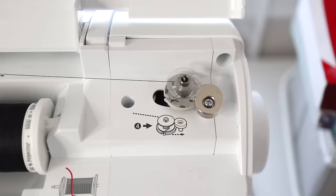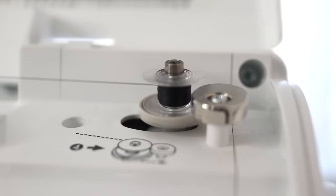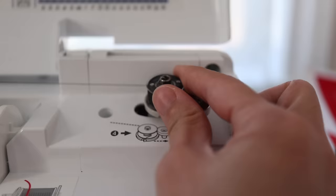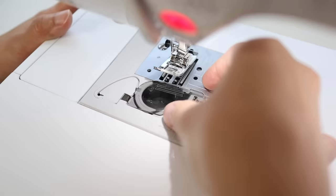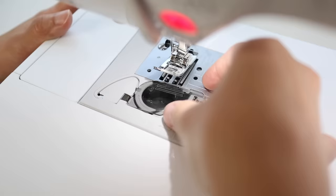To wind the bobbin just step on your foot pedal and the thread should start wrapping around tightly. My machine stops on its own once it's filled up then I switch the stub back to the other side so it's no longer in bobbin winding mode. Separate the bobbin thread from the main spool and place the bobbin in its home.